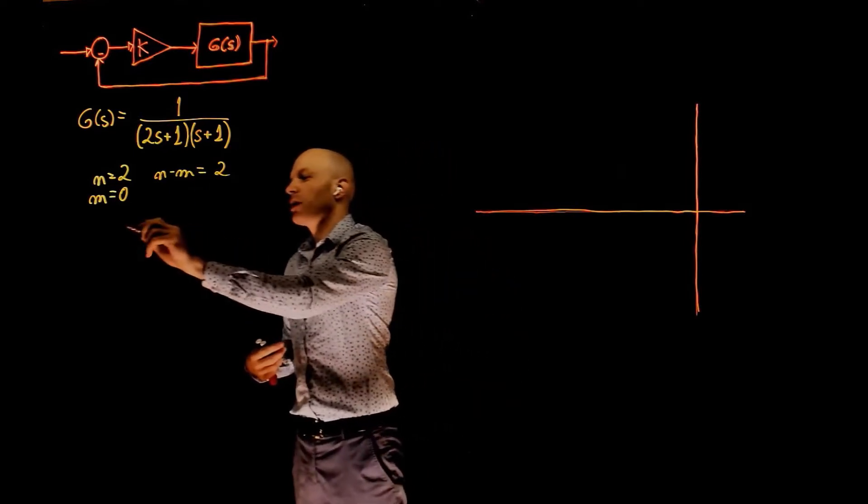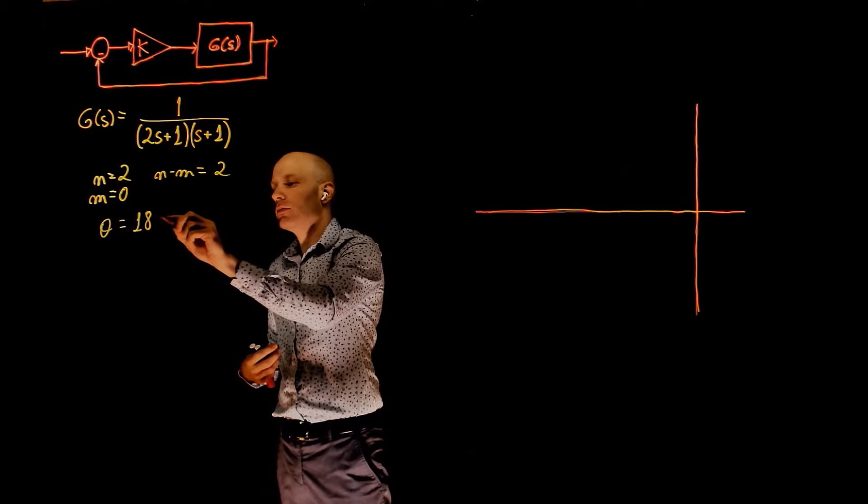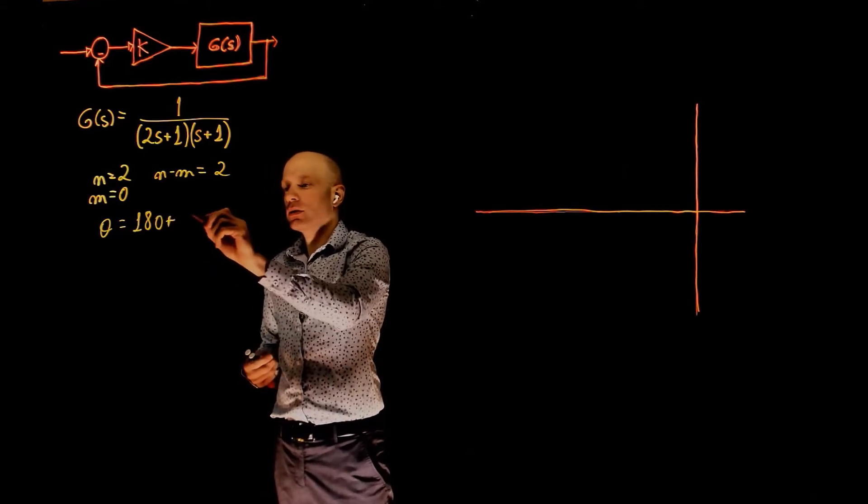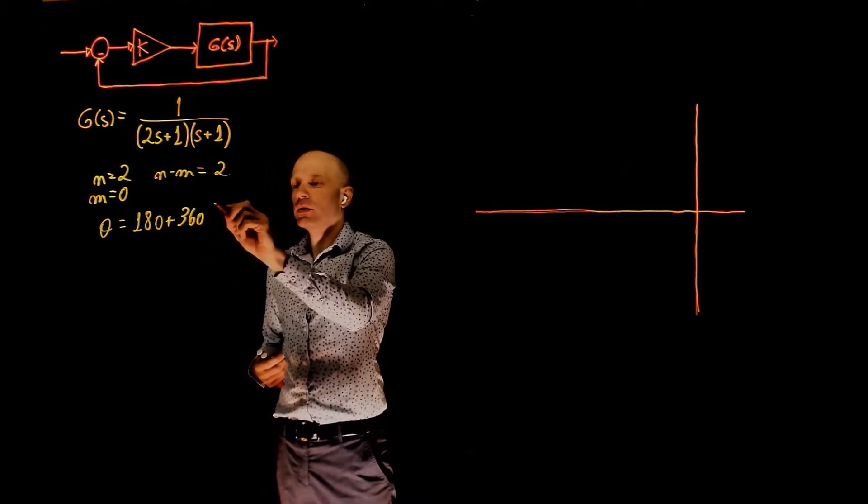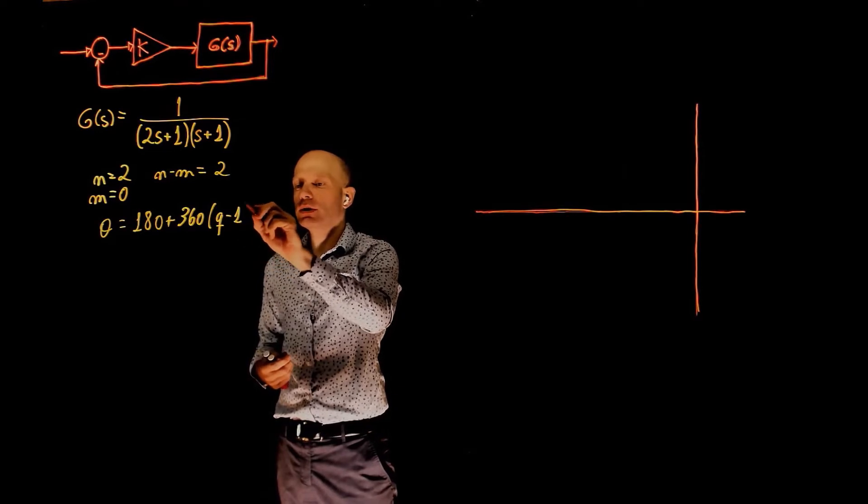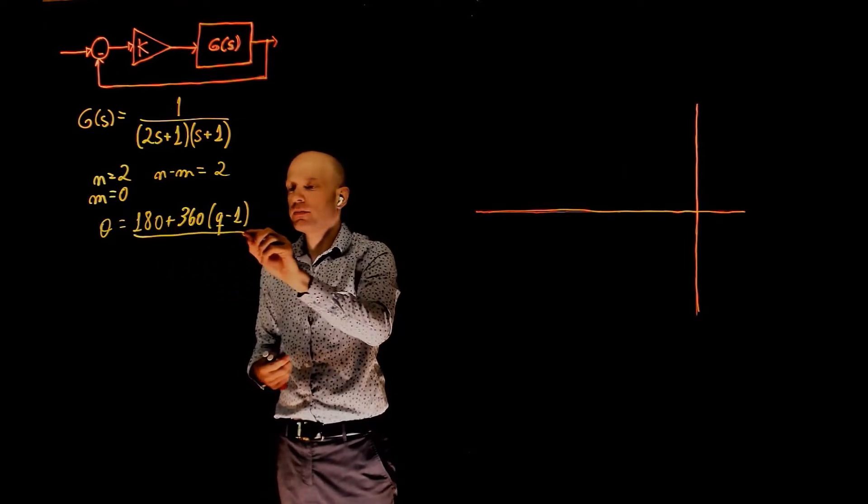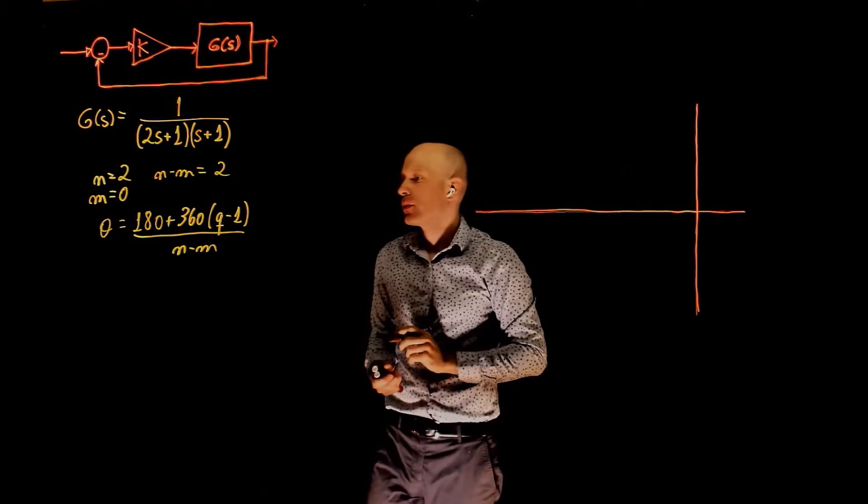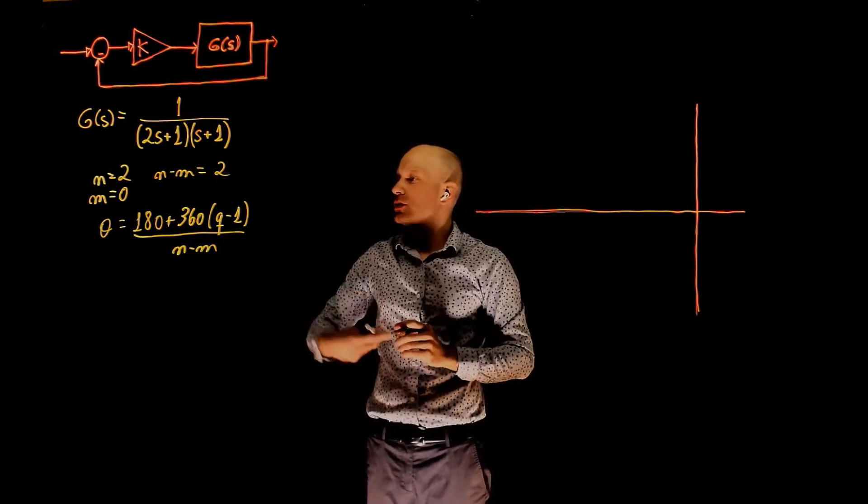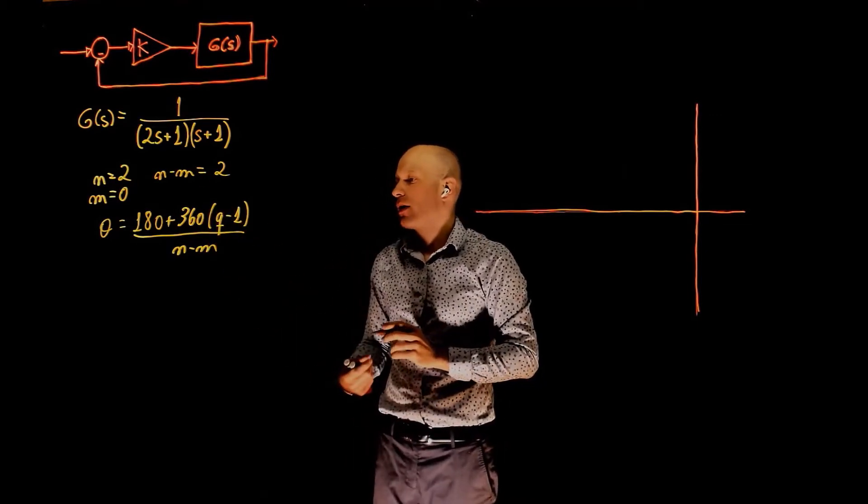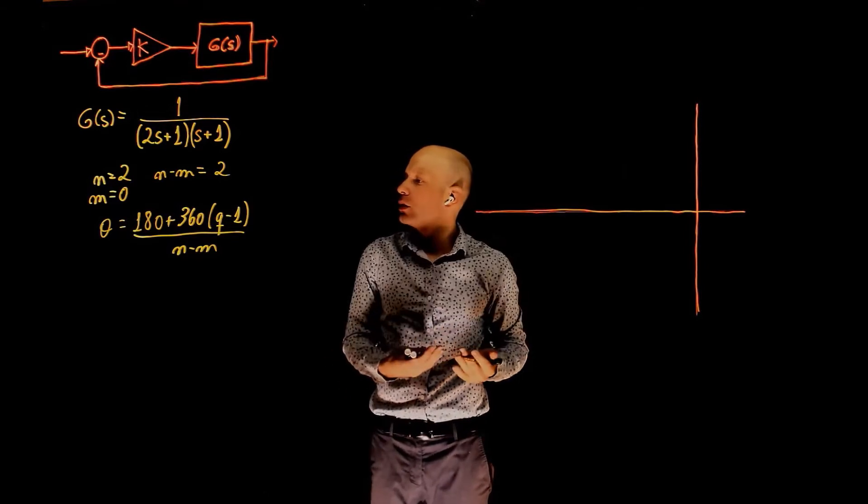To do that you can use the same formula again. Theta equals 180 plus 360 times (q minus 1) divided by n minus m. We know that q goes from 0 to n minus m, so we have q equals 1 and q equals 2.